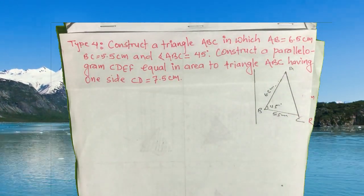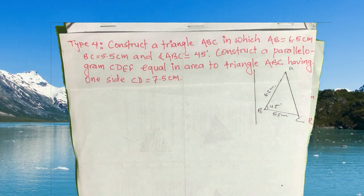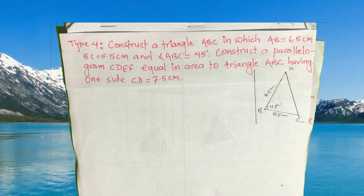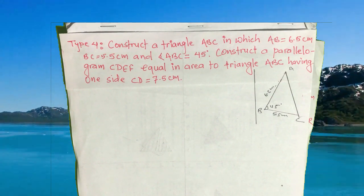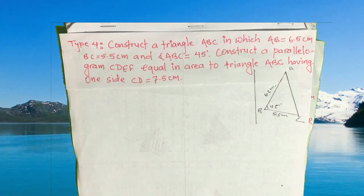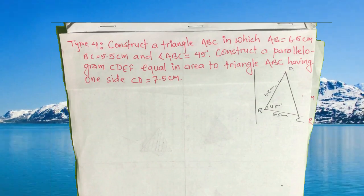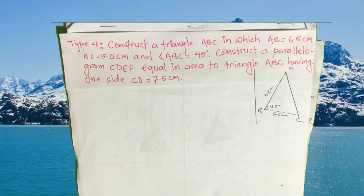Look at the figure here. BC is 5.5 centimeters, BA is 6.5 centimeters, and angle ABC is 45 degrees. This is our triangle. First we have to construct this triangle and then construct parallelogram CDEF.